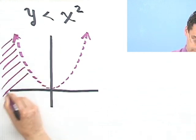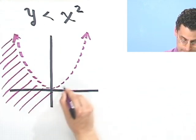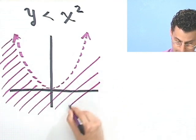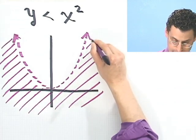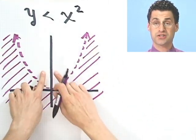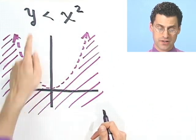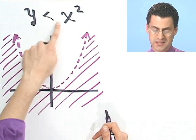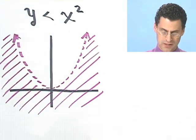And here's how I do it. So I shade everything. I shade everything out here, and this is unshaded. So there is the graph of y less than x squared. Let's try one last one.